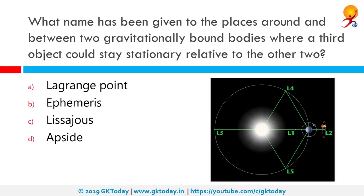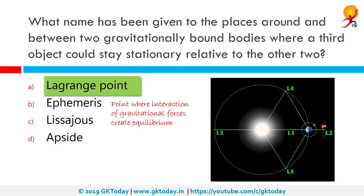What name has been given to the places around and between two gravitationally bound bodies where a third object could stay stationary relative to the other two? This is a point where the interaction of gravitational forces creates an equilibrium, called a Lagrange point. A Lagrange point is positioned in space where the combined gravitational forces of two large bodies — such as Earth and Sun, or Earth and Moon — equal the centrifugal force felt by a much smaller third body. These points are named after Joseph Louis Lagrange, an 18th-century mathematician. There are five such points between Earth and Sun: L1, L2, L3, L4 and L5.